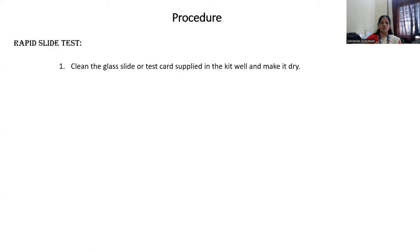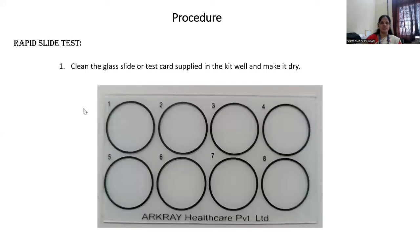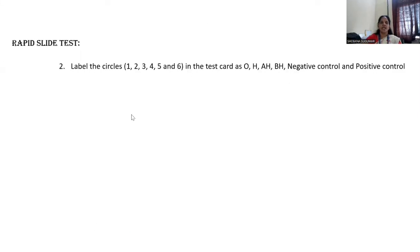Procedure — how to perform this experiment. First, take a clean glass slide or test card supplied in the kit and make it dry. This is the glass slide. Second, label the circles 1, 2, 3, 4, 5 and 6 in the test card as O, H, AH, BH, negative control and positive control.